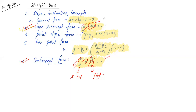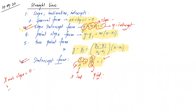Whatever remains in front of x on the right-hand side is the slope, and the lone constant is the y-intercept. These concepts were covered on day one and day two of straight lines. We also discussed that the slope of the x-axis is zero, and the slope of the y-axis is infinity (or 1/0). Then we discussed parallel and perpendicular lines.